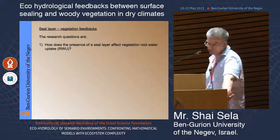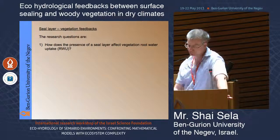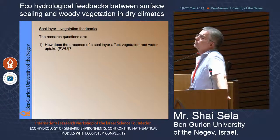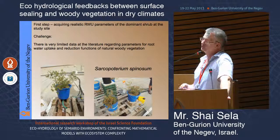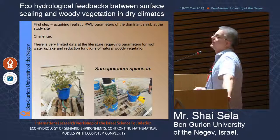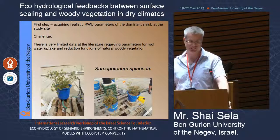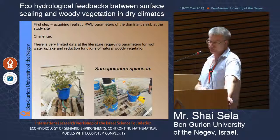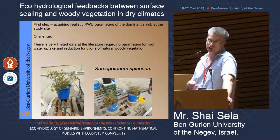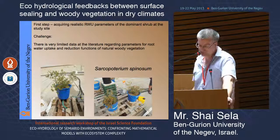This brings us to the first research question: how does the presence of a seal layer affect vegetation root water uptake? The first step is to acquire realistic root water uptake parameters of the dominant shrub at the study site — Sarcopoterium spinosum. This is quite a challenge because there is very limited data in the literature on root water uptake parameters for natural vegetation. Unlike crops, for which you can find parameters readily in the Hydrus catalog, parameters for Sarcopoterium spinosum practically do not exist.